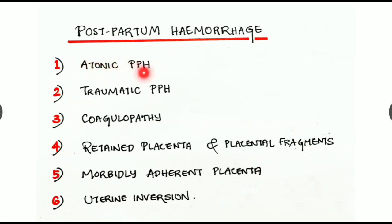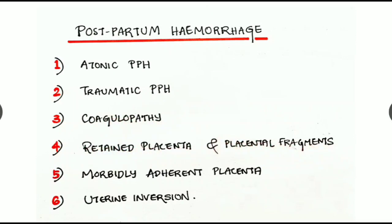In postpartum hemorrhage, the causes are: first, atonic postpartum hemorrhage; second, traumatic postpartum hemorrhage; third, coagulopathy; fourth, retained placenta and placental fragments or morbidly adherent placenta; and fifth, uterine inversion.